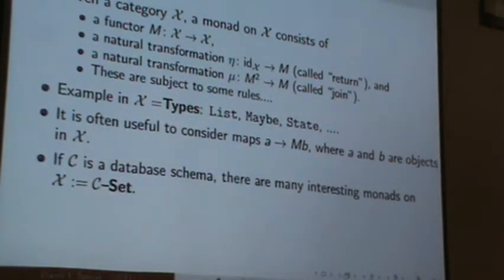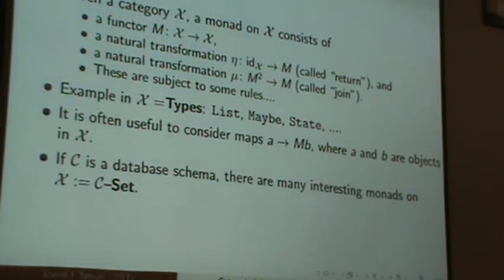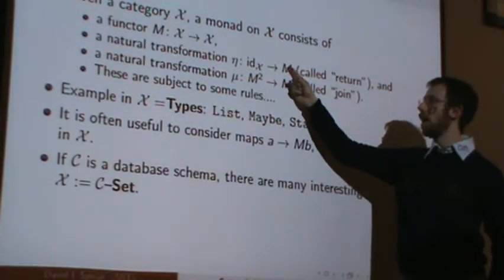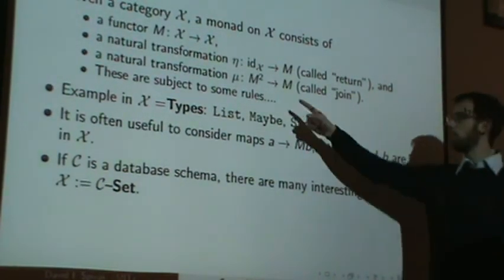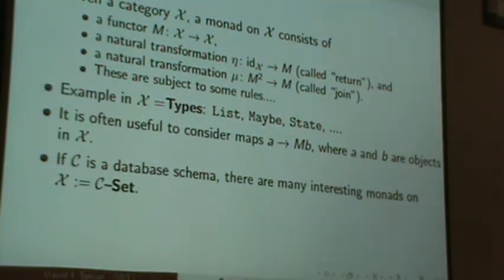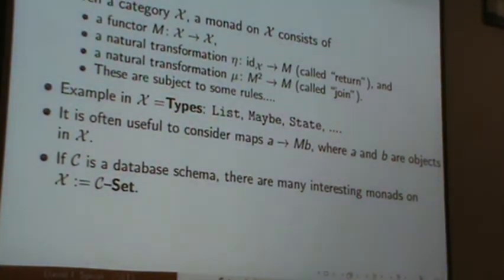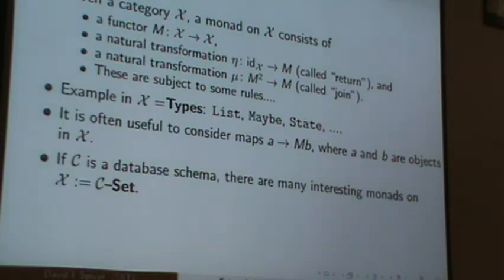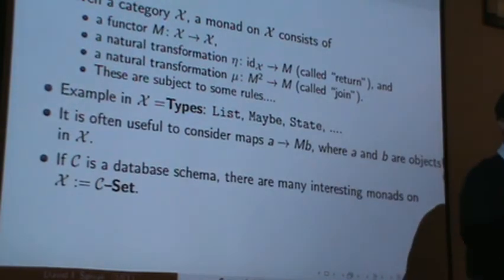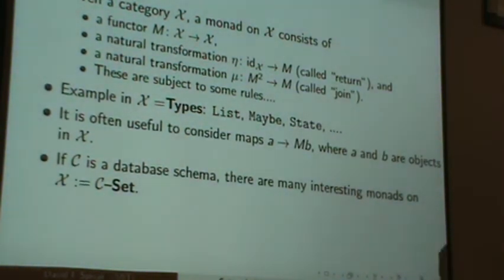Okay. So given a category X, what is a monad on X? It's a functor M taking X to X. And a return function from any object in X to M of that object. And a natural transformation from M squared to M called multiplying or join. And these are subject to some rules. So in X equals types, we have the list monad, maybe monad, state monad. So for example, list is a functor from types to types. It takes any type in the world, returns a new type, list of A. A goes to list of A. And there's these natural transformations. Any type in the world, I can send to a list of that type by just giving the one element list. And if I have a list of lists, I can flatten them into a single list. And that's join.